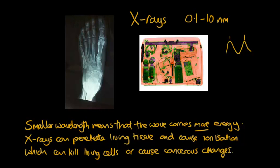The atoms that have been ionized in the cell can start reacting with things they shouldn't react with. That might kill the cell or it might change the blueprint of the cell — for example, the cell's DNA — and the cell might start to reproduce uncontrollably, and that would cause a cancer. So some electromagnetic waves, especially the shorter wavelengths such as x-rays and gamma rays, can cause cancerous changes.